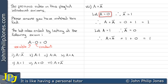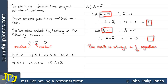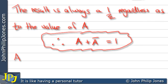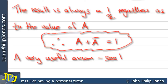When A was zero the result was one, and when A was one the result was also one. The result is always one regardless of the value of A. Therefore A OR NOT A will always give us a one, and this is another example of an axiom. In fact, this is a very useful axiom as we will see in later videos.